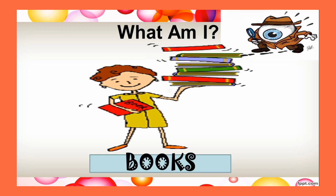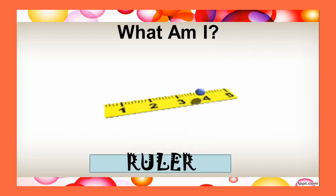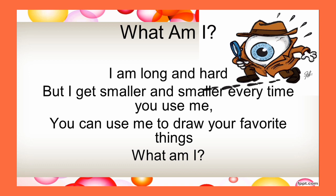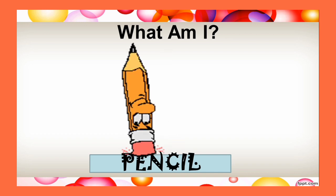I am usually flat and straight. I have lots of numbers all over my body. You just use me to make straight lines. What am I? The answer is ruler. Next question. I am long and hard, but I get smaller and smaller every time you use me. You can use me to draw your favorite things. What am I? A pencil.